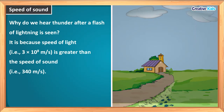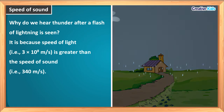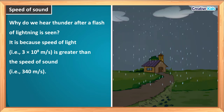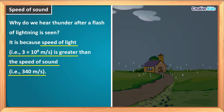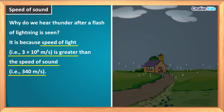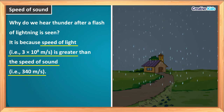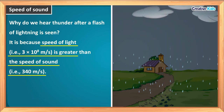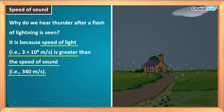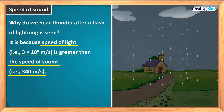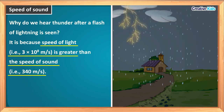Have you ever noticed why we hear thunder after a flash of lightning is seen during a thunderstorm? It is because the speed of light, that is 3 × 10⁸ meters per second, is greater than the speed of sound, that is 340 meters per second. So we hear thunder after a flash of lightning because the speed of light is much greater than the speed of sound. With that, we have completed this module.